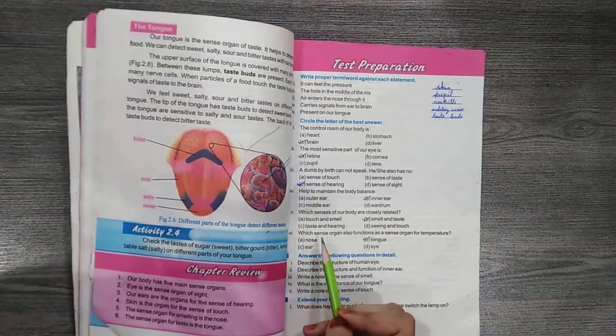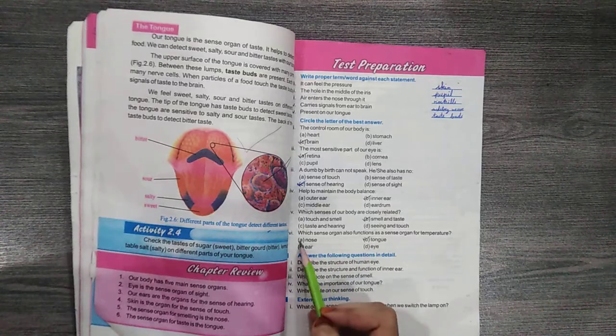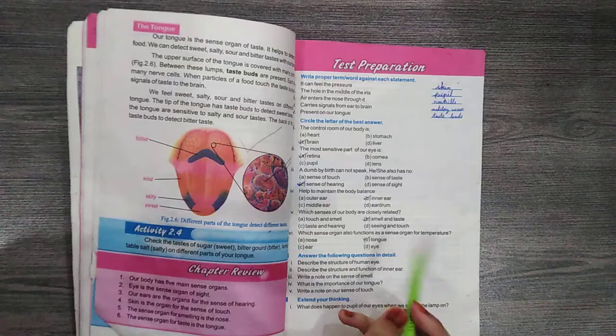Question number 6: Which sense organ also functions as a sense organ for taste? A. Nose, B. Tongue, C. Ear - the answer is B. Tongue.